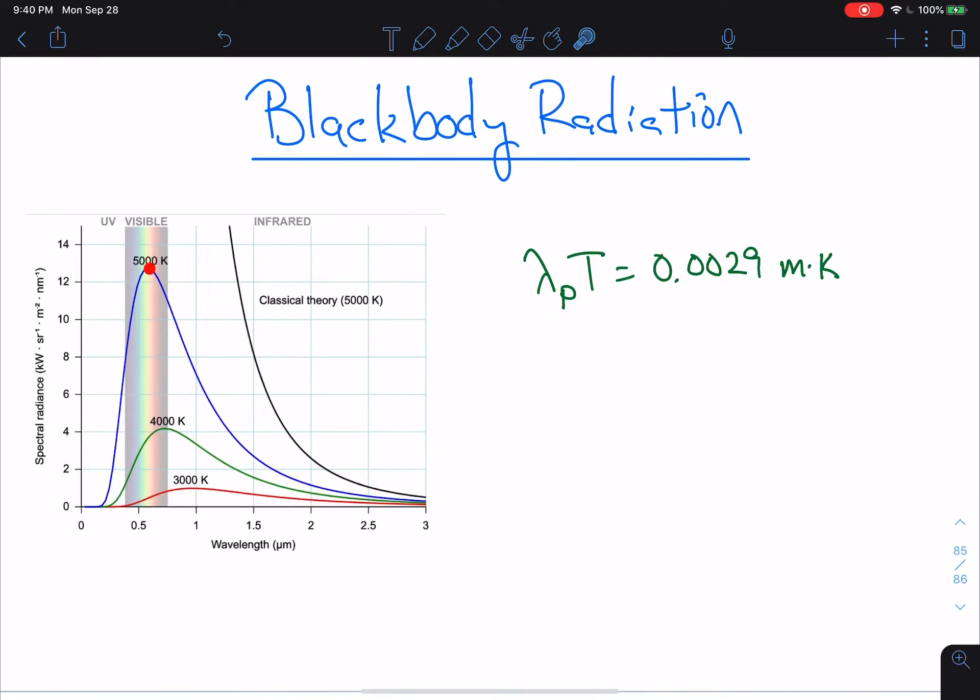This lambda_p is the peak wavelength. And it corresponds to the temperature. And we have this nice, simple relationship that relates this peak wavelength to the temperature. And as I mentioned, you can use this to get an excellent approximation for the temperature of most anything.